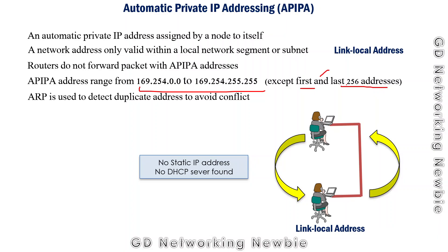Once a node selects a random address from this reserved APIPA range, there is a chance two nodes may pick the same IP address. To avoid conflicts, they use ARP — Address Resolution Protocol — to ask other nodes whether a given IP address is already in use. This prevents duplication. That concludes this introduction to APIPA; next we'll demonstrate the same thing in Cisco Packet Tracer.